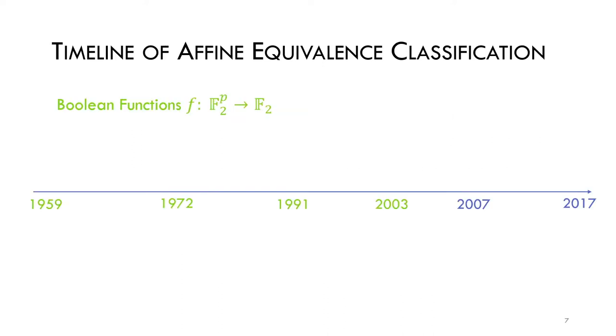Affine equivalence has been used for many years, since the 50s. By 1972, all Boolean functions with up to five variables were classified. In 1991, Majorana classified also the Boolean functions with six input variables, and Fuller proved in 2003 that this classification was complete.